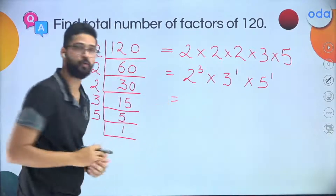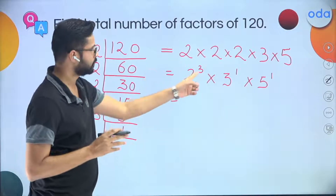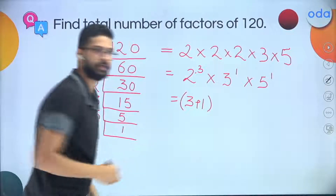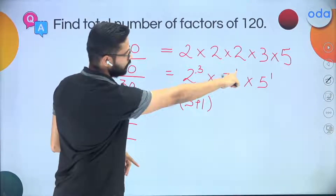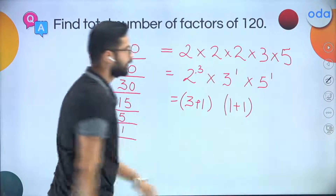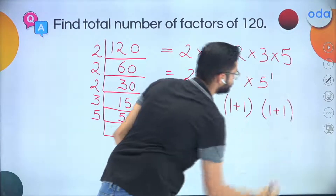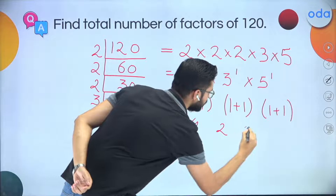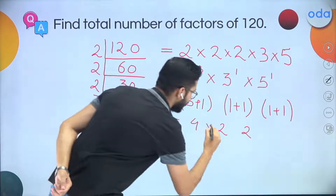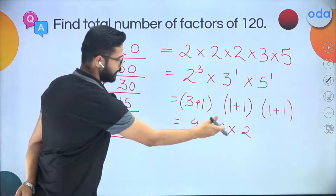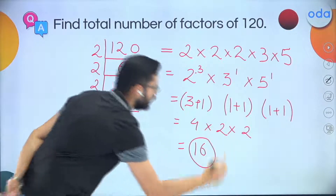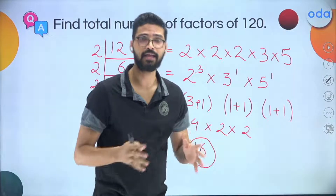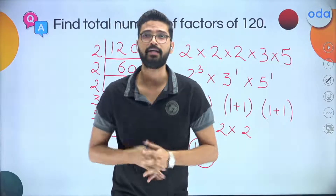Step 3 — add 1 to every power. The power of 2 is 3, so 3 + 1 = 4. The power of 3 is 1, so 1 + 1 = 2. The power of 5 is 1, so 1 + 1 = 2. Step 4 — multiply these results: 4 × 2 × 2 = 16. So 16 is the total number of factors the number 120 has — without actually listing all the factors.